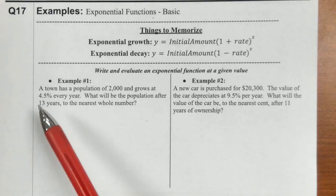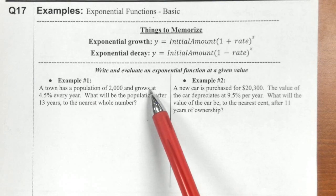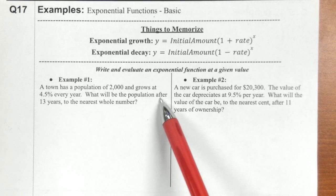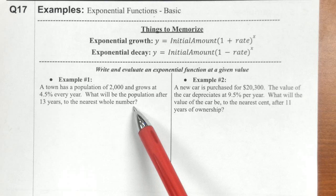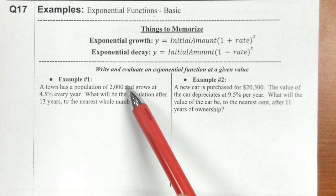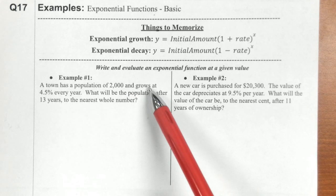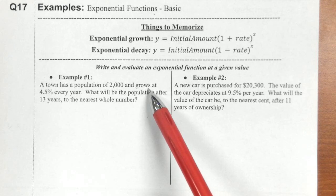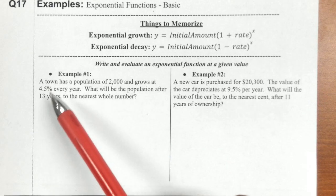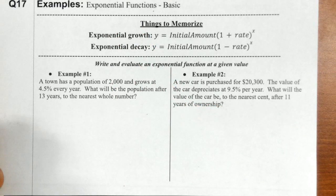So let's actually try to figure it out. It says a town has a population of 2,000 and grows at 4.5% every year. What would be the population after 13 years to the nearest whole number? Anytime you have some starting amount that's either growing or decaying, increasing or decreasing, appreciating or depreciating, or just changing at some percentage over some period of time — that represents an exponential function.